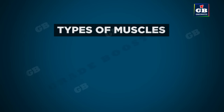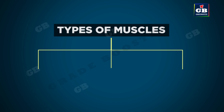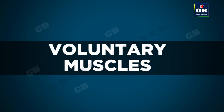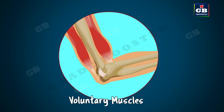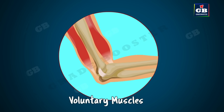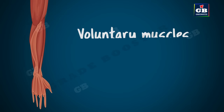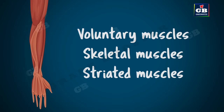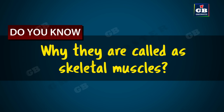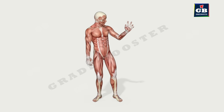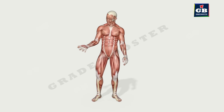Muscles are of three types: voluntary muscles, involuntary muscles, and cardiac muscles. Voluntary muscles are under the control of our conscious will — we can contract or relax them at will. Examples are the muscles of our hands and legs. Voluntary muscles are also called skeletal muscles or striated muscles. Most voluntary muscles are attached to the skeletal system and help in body movement, hence they are called skeletal muscles.